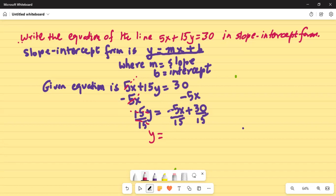On the right-hand side, 5 goes into 5 one time and 5 goes into 15 three times, so I have negative 1/3x plus... 15 goes into 30 two times and 15 goes into itself one time, so 2 divided by 1 is 2. The final slope-intercept form is y equals negative 1/3x plus 2.